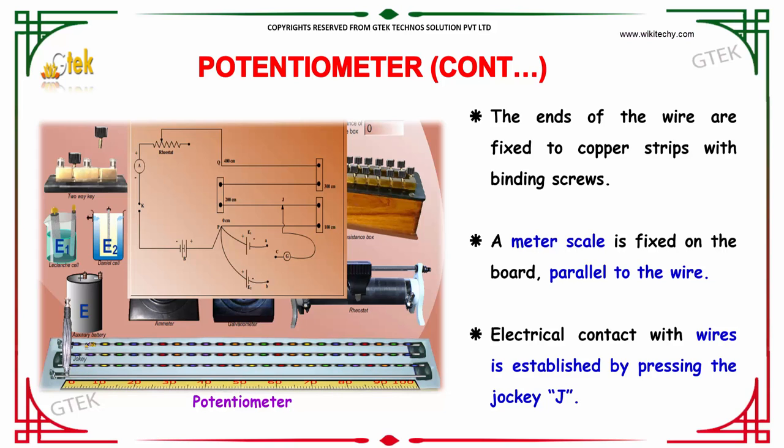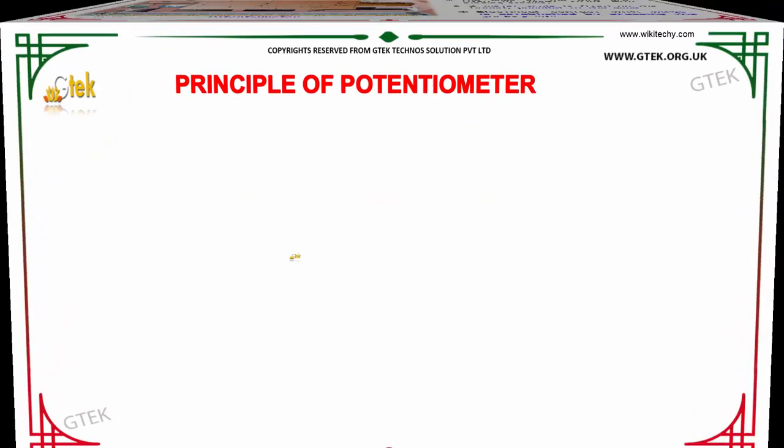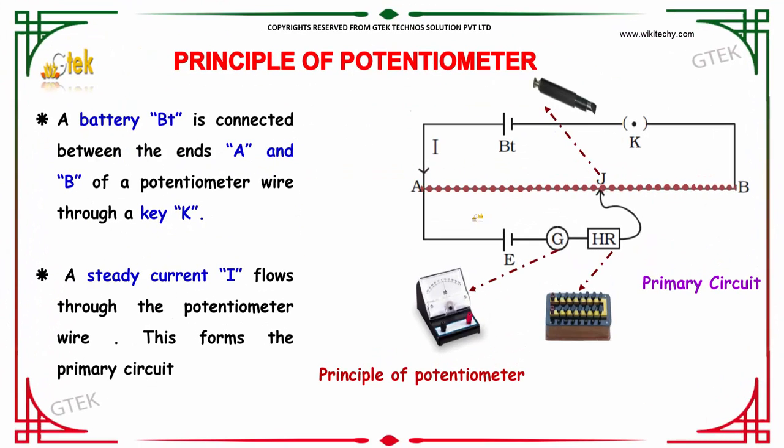Electrical contacts with the wire is established by pressing the jockey J. A battery BT is connected between the ends A and B of a potentiometer wire through a key K. A steady current I flows through the potentiometer wire. This forms the primary circuit.